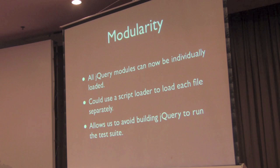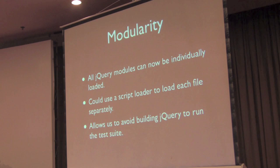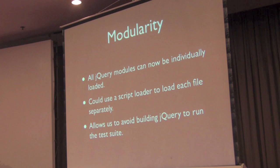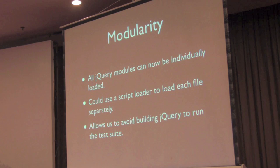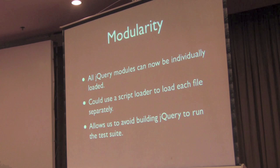Another thing that we've been working on is modularity — breaking down jQuery into smaller pieces of code so that they could possibly be loaded individually. We still try to make sure that jQuery is as small as possible and that it doesn't have too many features, but at the same time we like to make sure that the dependencies from one piece of jQuery to another are reduced. One of the nice things about doing this is that it's allowed us to make sure that when we run the test suite, we don't have to rebuild jQuery every single time, which allows us to develop much faster as a result.